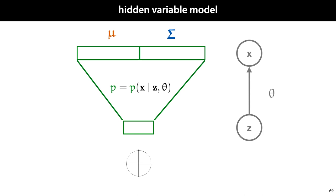Our first insight is that we can view this as a hidden variable model. We have a hidden variable z, which is a standard normally distributed vector, which we feed to a neural network to produce a variable x — the data that we actually observe. The probability density function that the network computes for us is the conditional distribution of x given the hidden variable z.